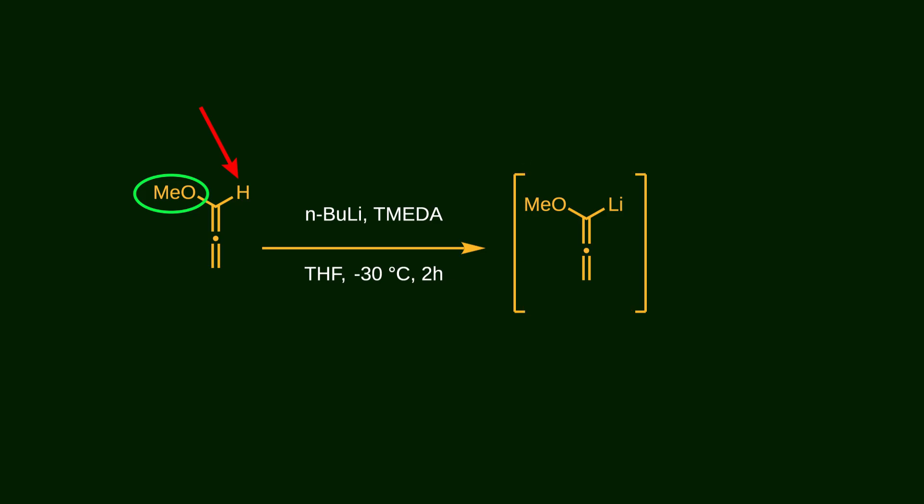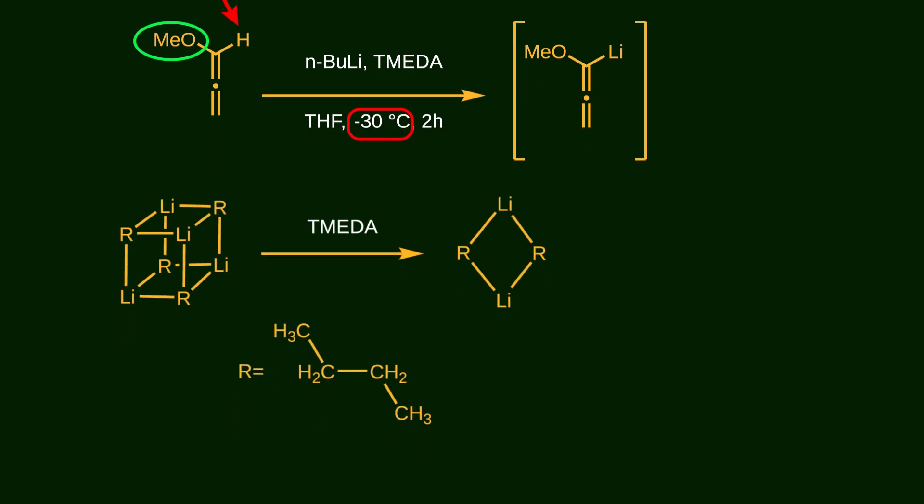Notice that the reaction is carried out at minus 30 degrees where n-butyl lithium typically exists as a tetramer. TMEDA is added as an additive. Because nitrogen has a strong tendency to coordinate to lithium, TMEDA binds to the lithium atoms in n-butyl lithium and breaks off the tetramer into a more reactive dimeric form.